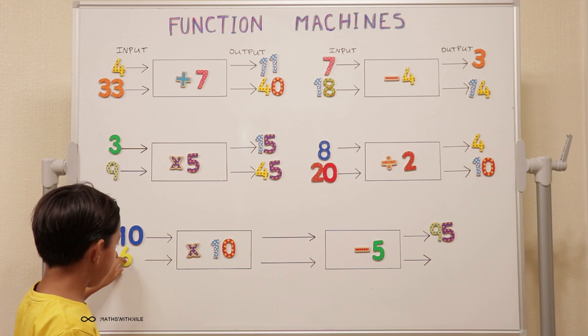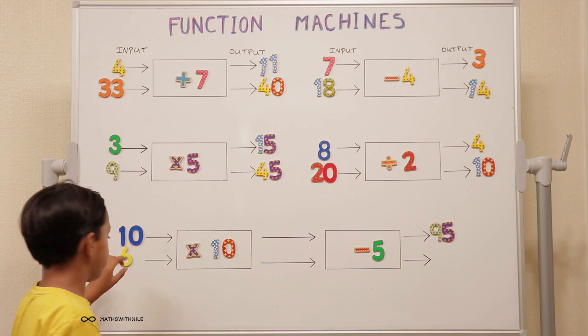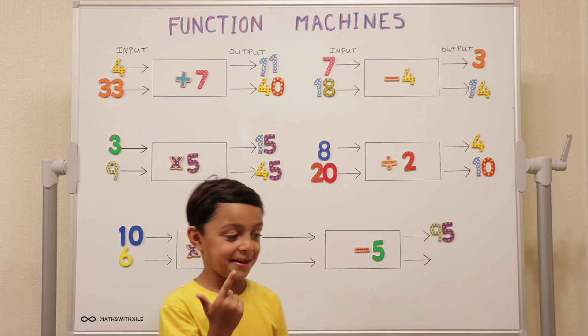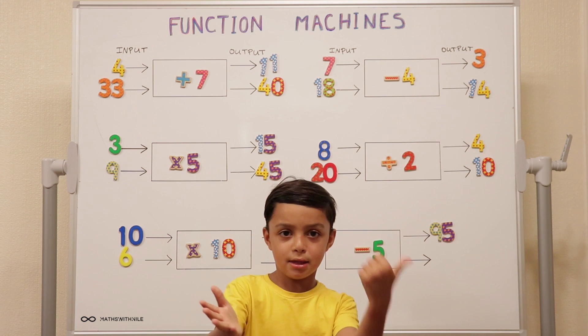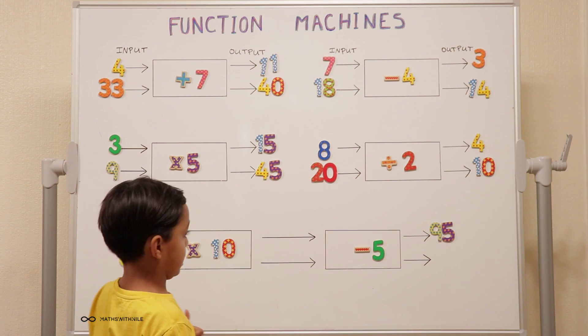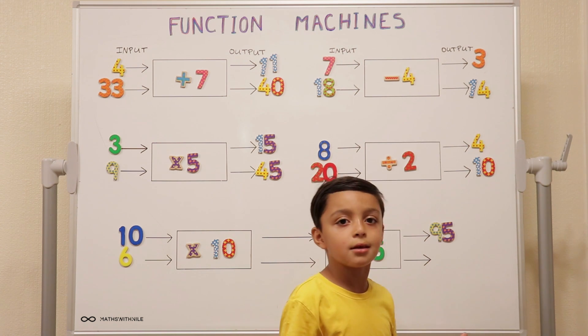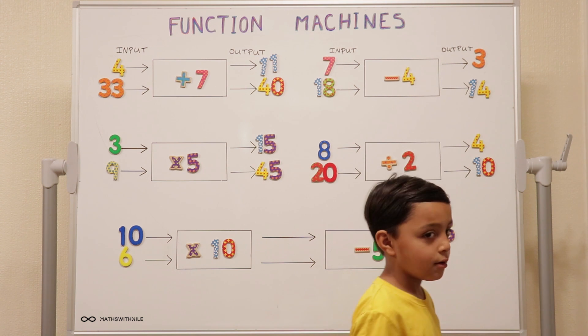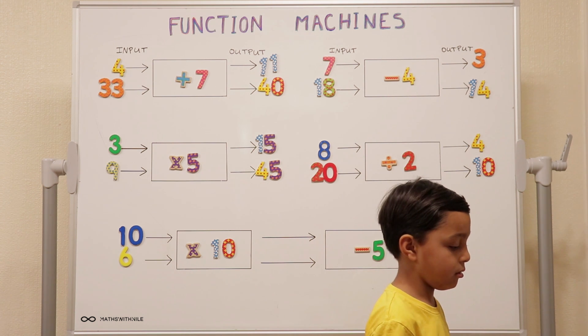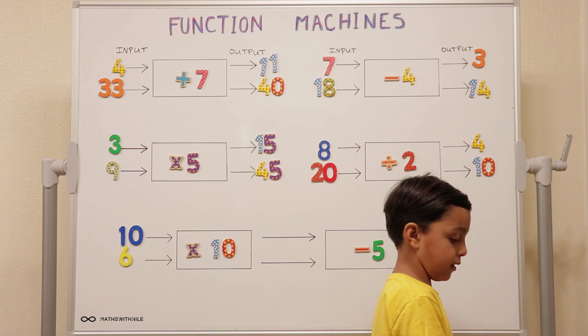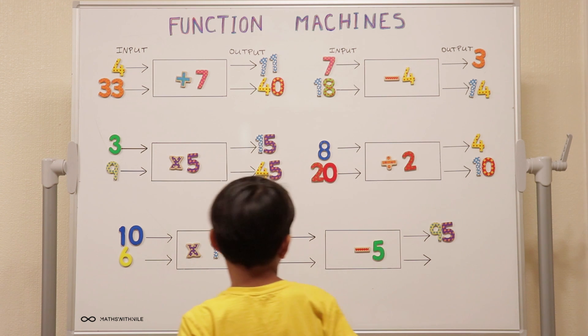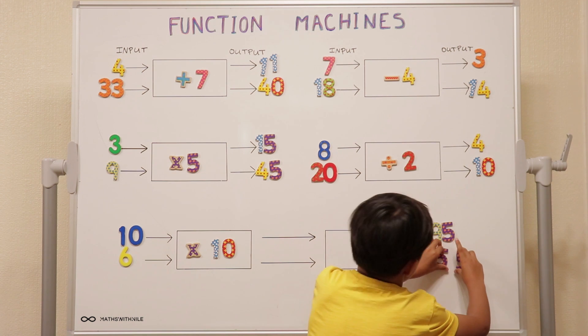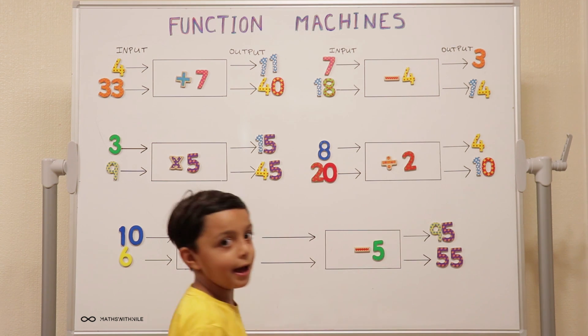You want to do that one? Six times ten. Can you count using your fingers? Ten, twenty, thirty, forty, fifty, sixty. Sixty minus five is fifty-five. Very good.